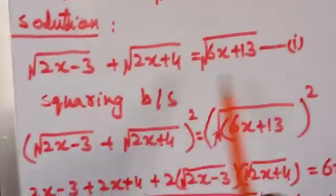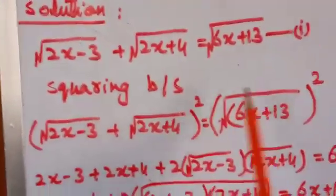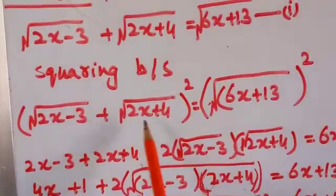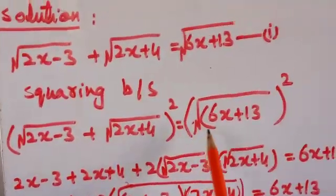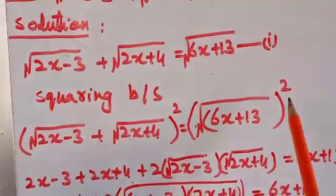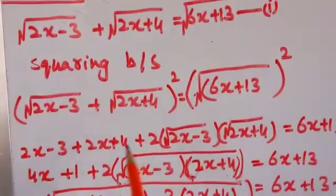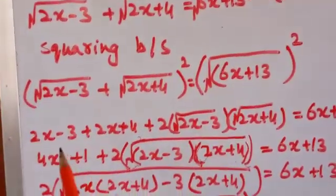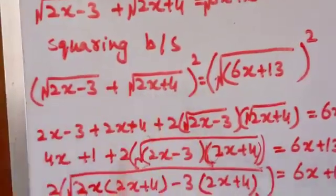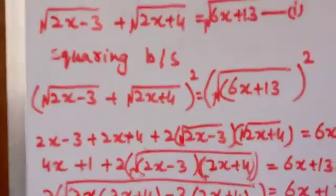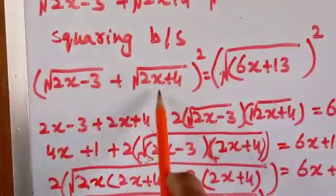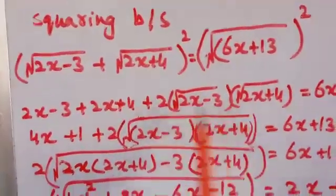This is your first equation. Squaring on both sides: [√(2x − 3) + √(2x + 4)]² = [√(6x + 13)]². According to the first formula, (a + b)² = a² + b² + 2ab.